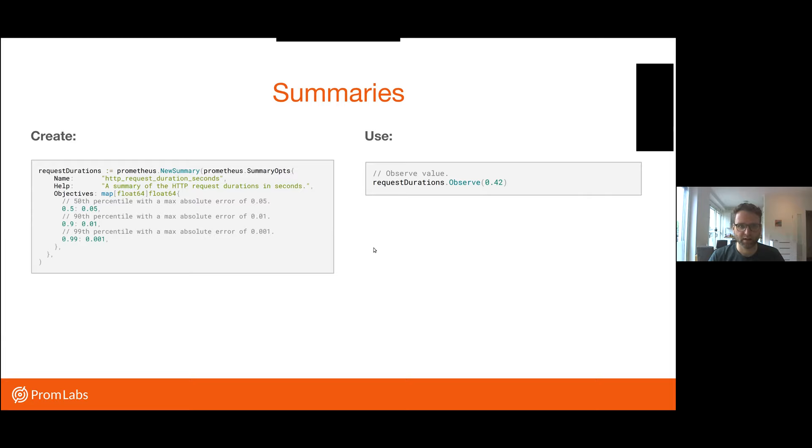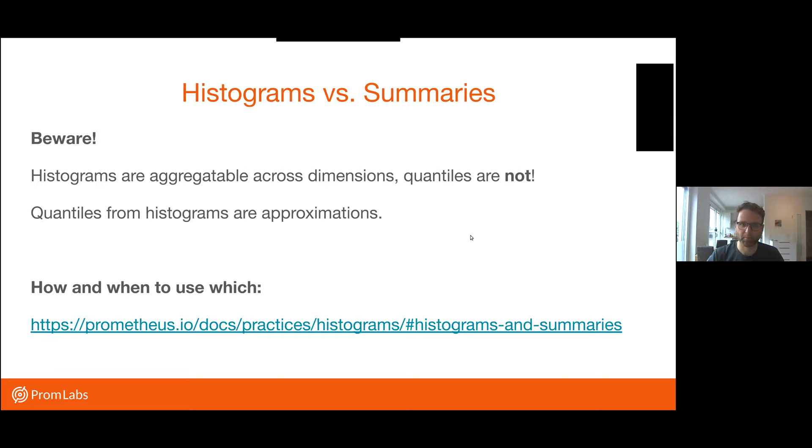Summaries, similar thing. Instead of buckets though, you need to provide the quantiles, the percentiles that you want to calculate and the error margin that you want to have for each of these. So in this case, we want to calculate in a streaming fashion, the 50th, 90th and 99th percentile. And the way you observe values into a summary is exactly the same as with a histogram. You just get a different result.